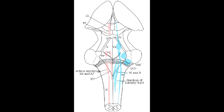What cranial nerves provide input to the nucleus ambiguus? The cranial nerves that provide input to the nucleus ambiguus include cranial nerve 9 and cranial nerve 10 — the glossopharyngeal nerve and the vagus nerve.